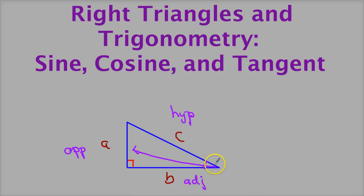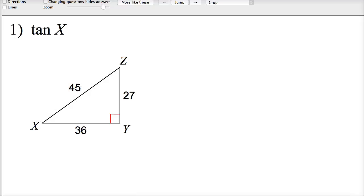So, the opposite side would be the one across from the angle you're interested in. The adjacent side would be the one next to it that's not the hypotenuse. Hypotenuse is the big one across from the right angle. Once you get that all set up, it's actually pretty easy to get answers.